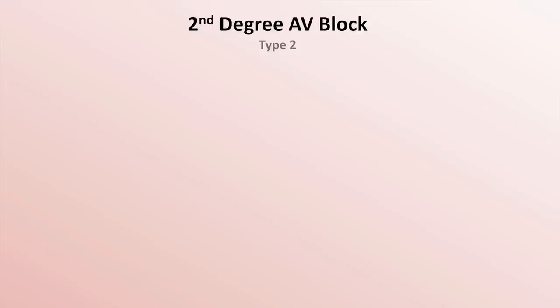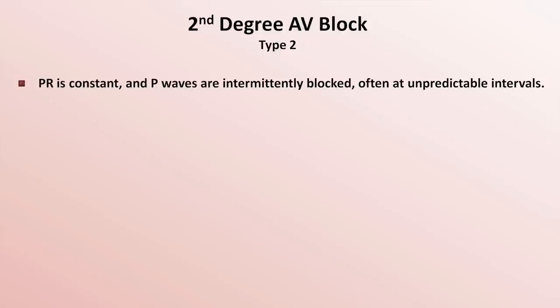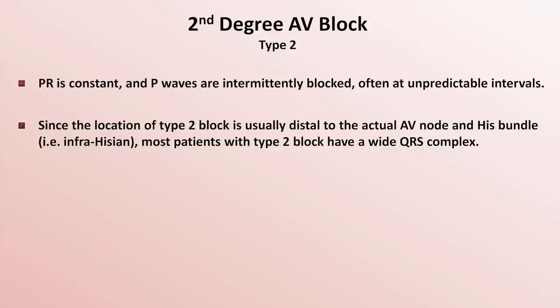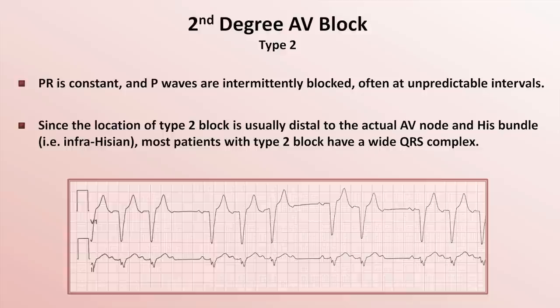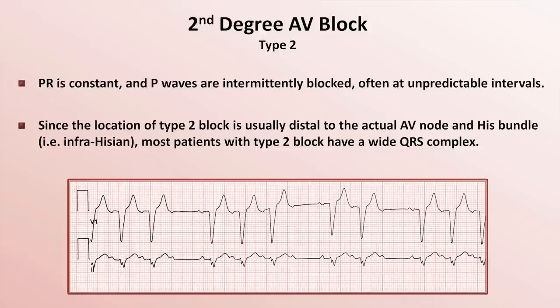Although type 2 second degree block is more serious, it is far simpler to identify and understand. In type 2 block, the PR is constant and P waves are intermittently blocked, often at unpredictable intervals ranging from every third beat to only a handful an hour. Since the location of type 2 block is usually distal to the actual AV node and His bundle, most patients with type 2 block have a wide QRS complex. This location is referred to as infrahissian — meaning distal to the His bundle, within the bundle branches, fascicles, or Purkinje fibers. Here's an example of type 2 block: notice the PR interval is constant, easiest to see in lead 2 on the bottom, but there are occasional P waves that don't get conducted.